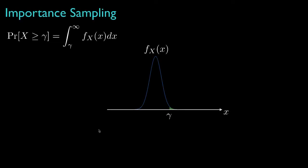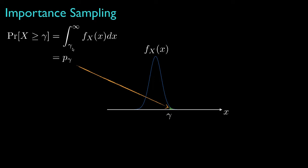Let's begin by thinking about the tail probability for some distribution. We're looking at a situation where the probability is a small number because we're out on a threshold that's very far out on the tail. The definition of that probability is the integral of the distribution — the area of the distribution to the right side of this threshold gamma. I'll call that probability P sub gamma.